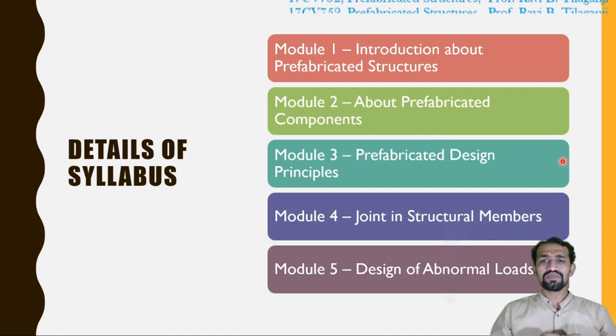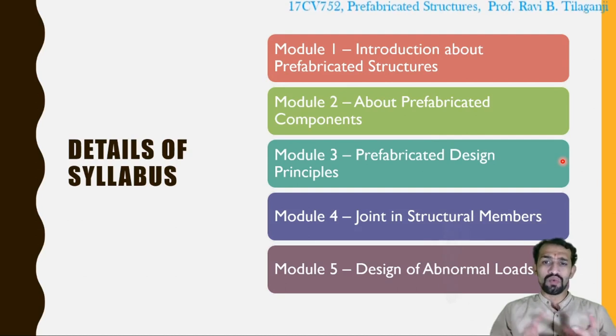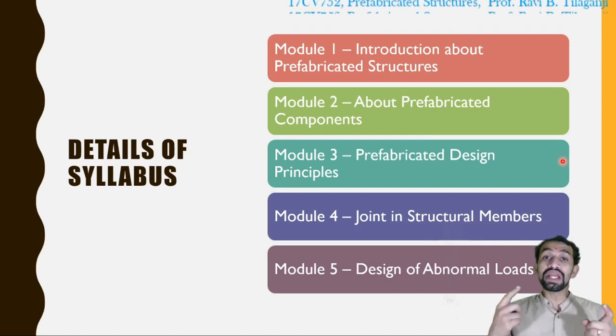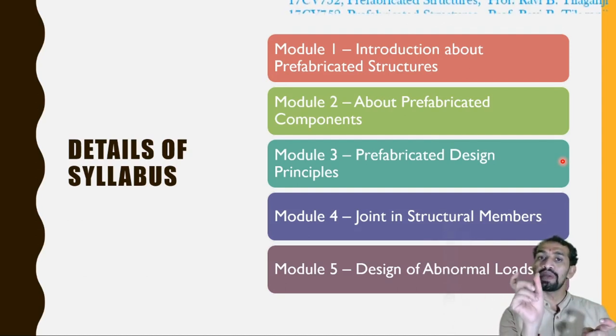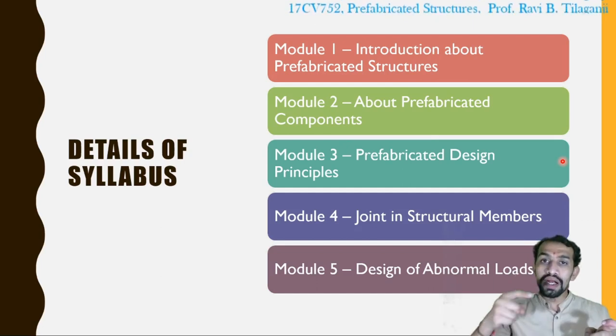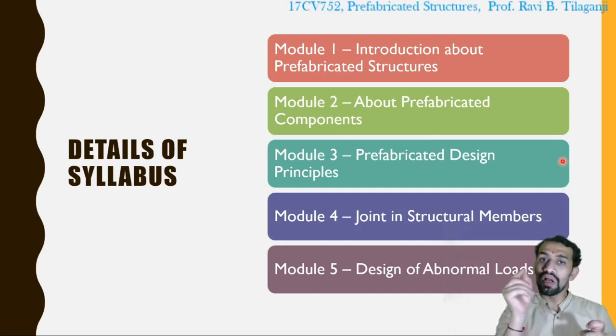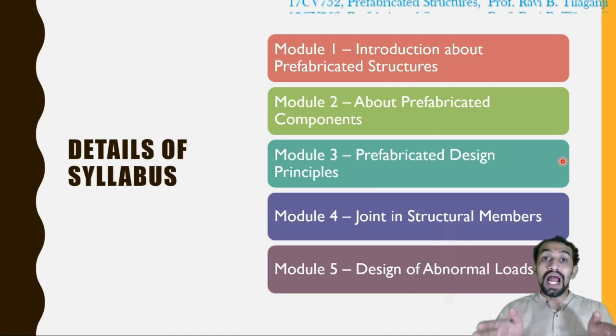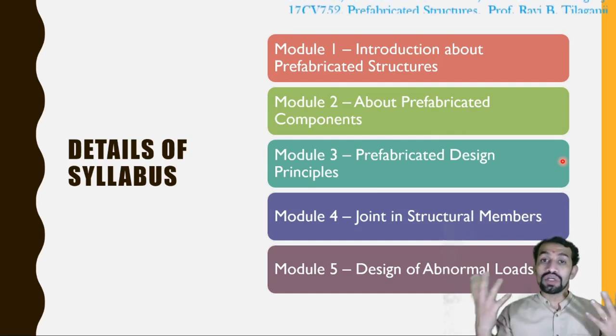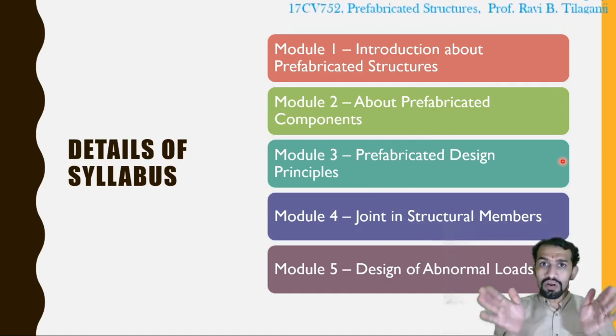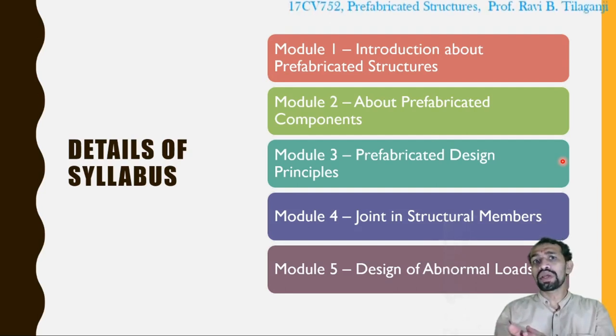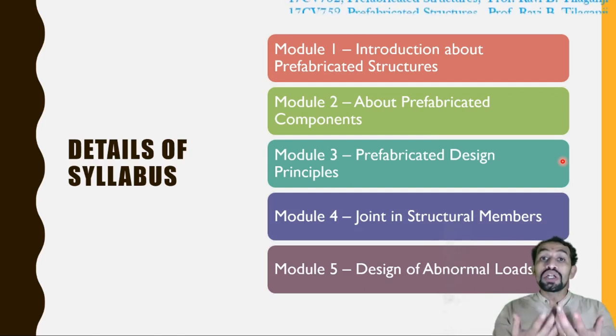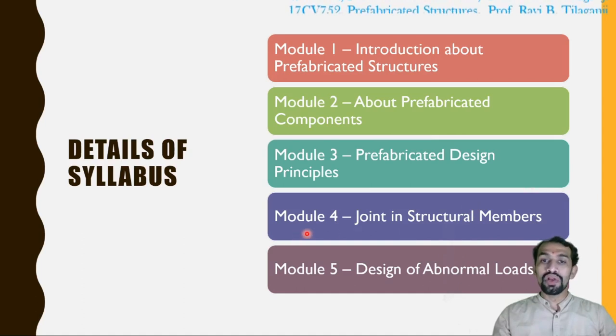Module number 4, joint in structural members. When this comes, joint in structural members and related to the word prefabricated, the name itself - pre is already, it's already done. Pre means already. Fabricated what? We usually prepare once the section has prefabricated. So that prefabrication we have to consider. Means already prepared. How we are going to prepare that will be considered. What joint connections, that will be dealt in module number 4.